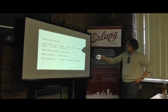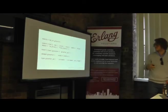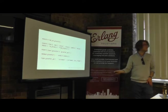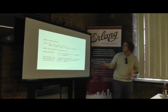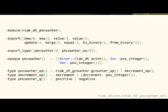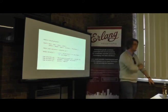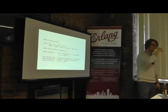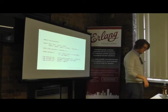The G-counter and PN-counter implement that interface, export type signatures for Dialyzer, and are modeled as an orddict. Operations are increment and increment-by-integer. The PN-counter composes two G-counters — one tracking positives, one tracking negatives — and takes the difference. It extends the interface with decrement, which just calls increment on the decreasing set.